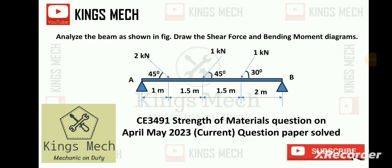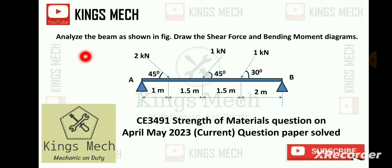This is our CE 3491 Strength of Metals question paper, April May 2020. We are going to see the individual problems. The second question: analyze the beam as shown in the figure, draw the shear force and bending moment diagrams. This is coming under unit number two — the second unit.